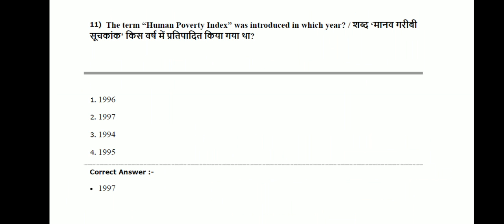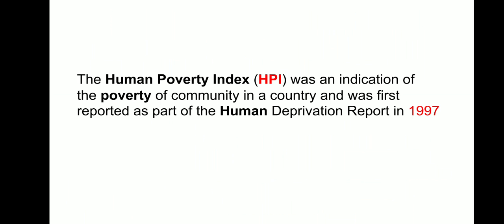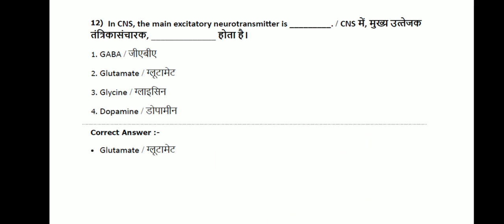The first question: the term Human Poverty Index was introduced in which year? Options are 1996, 1997, 1994, 1995. The correct answer is 1997. The Human Poverty Index was introduced in 1997. It was an indication of the poverty of a community in a country. In India it was first reported in 1997.